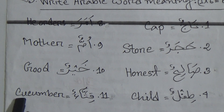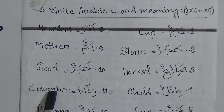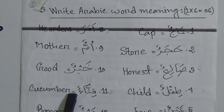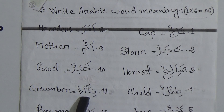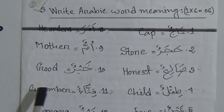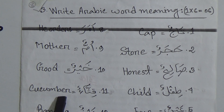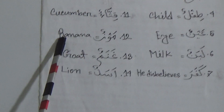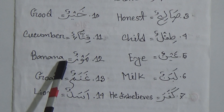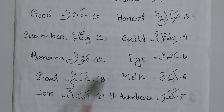Number 9: Ommun. Ommun means mother. Number 10: Khairun. Khairun means good. Number 11: Kishawun. Kishawun means cucumber. Number 12: Mawzun. Mawzun means banana.